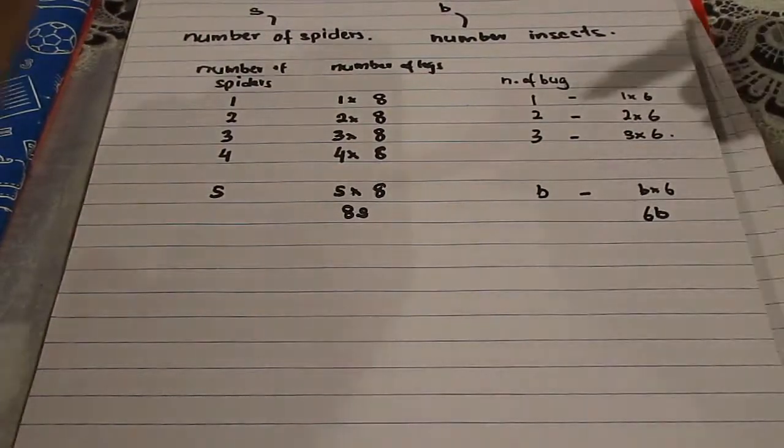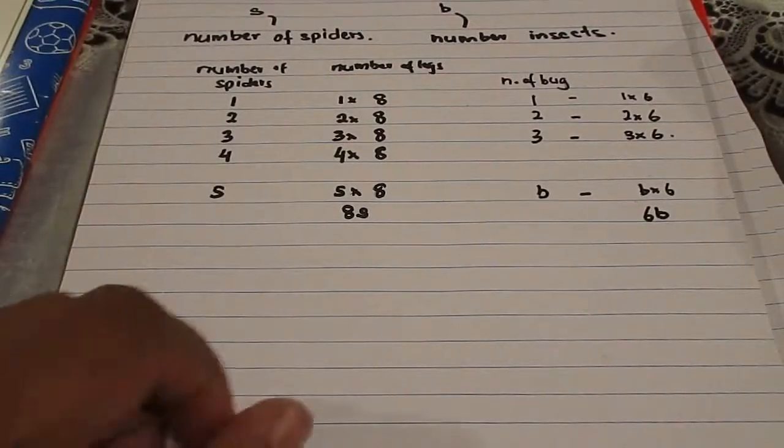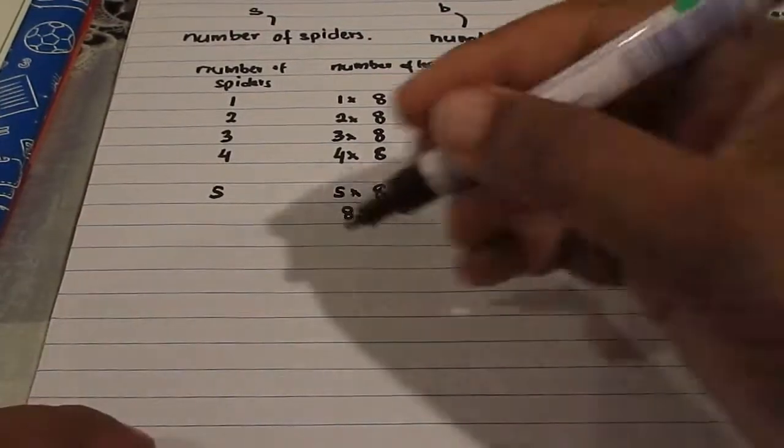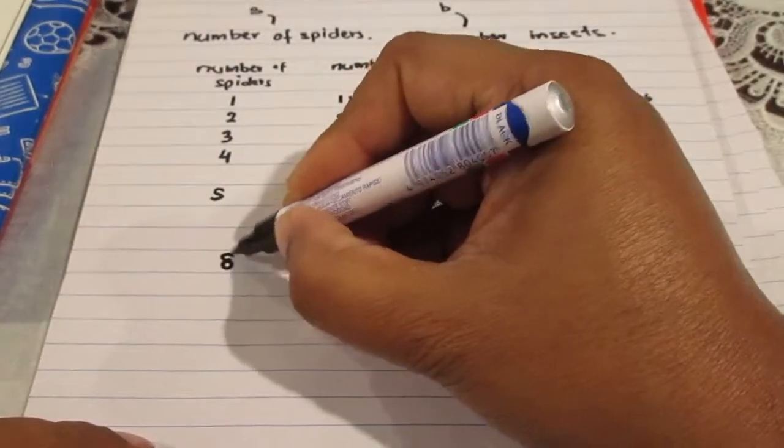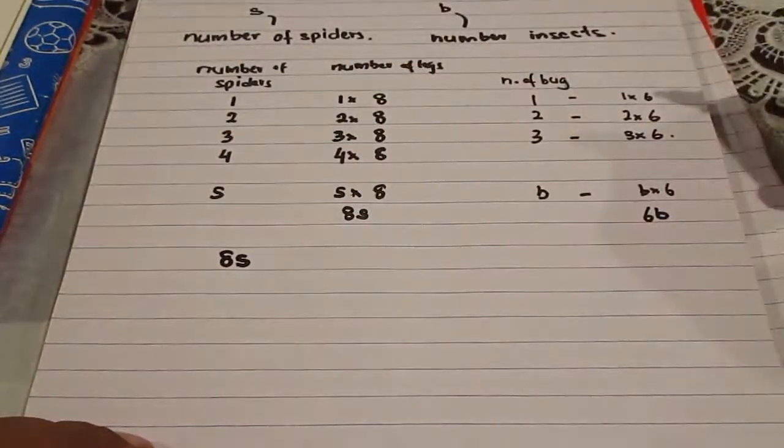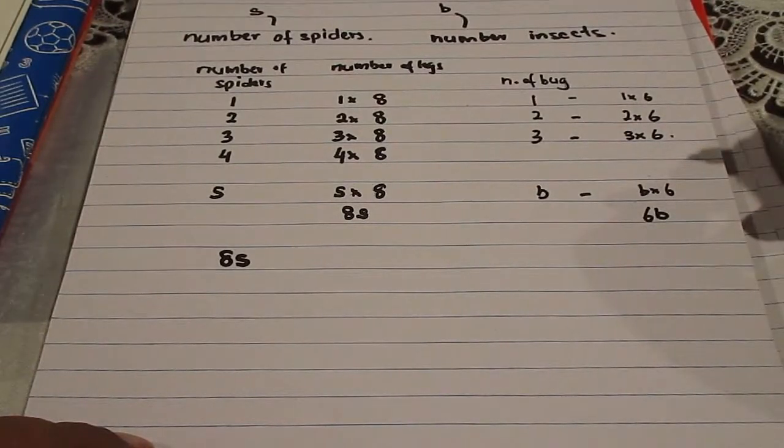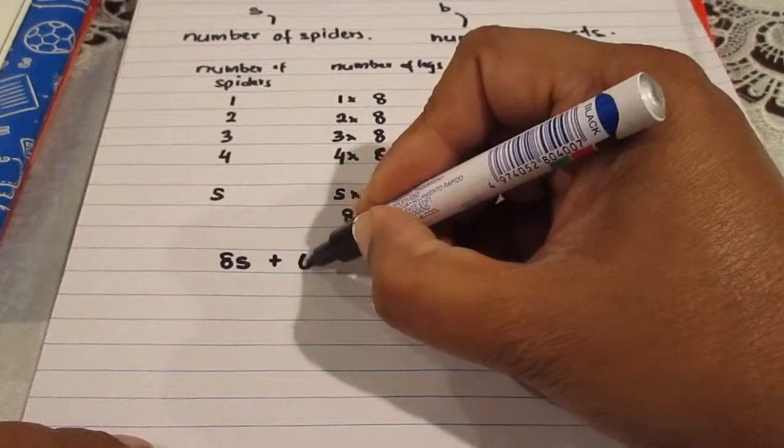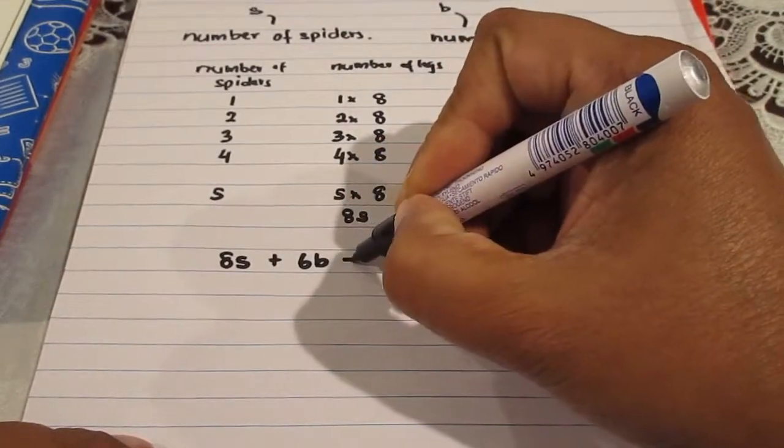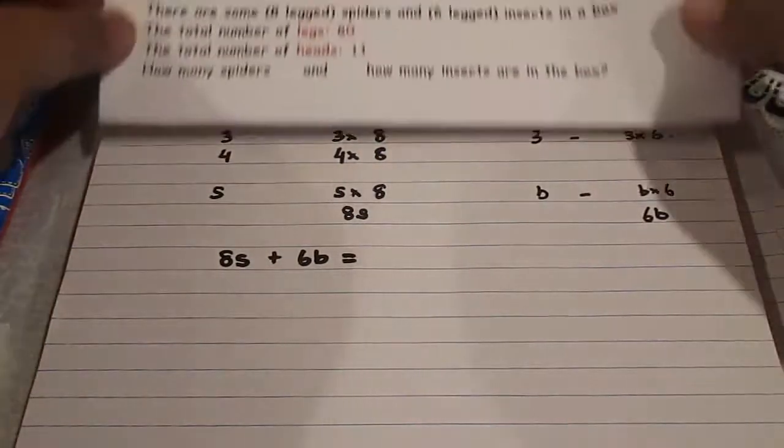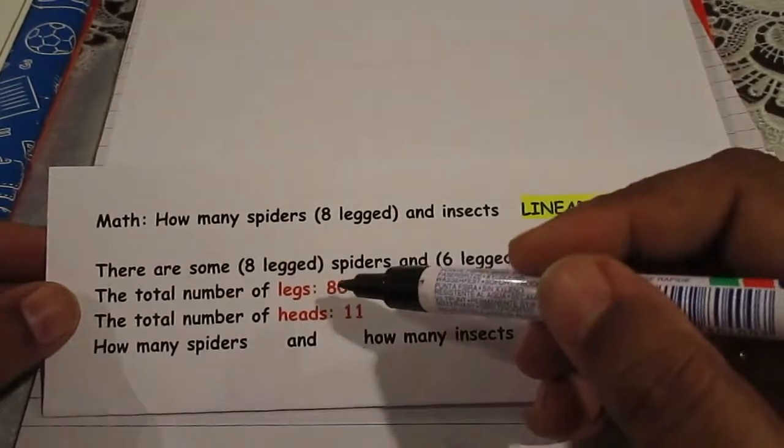So the total number of legs in the box. There are s spiders which have 8s legs and there are b bugs which have 6b legs, and our question gives this as 80.